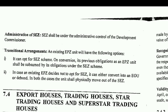Transitional arrangements: an existing EPZ unit will have the following options — it can opt for the SEZ scheme. On conversion, its previous obligations as an EPZ unit shall be subsumed by its obligations under the SEZ scheme. So whatever the unit was doing under EPZ, the same activities continue under SEZ, plus it must fulfill SEZ-specific obligations.